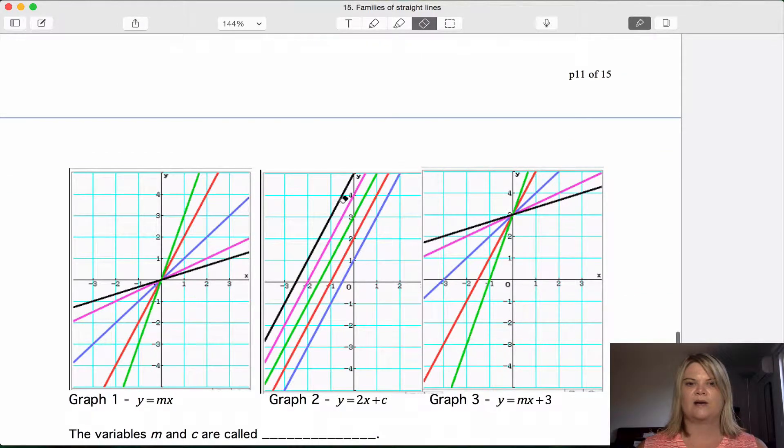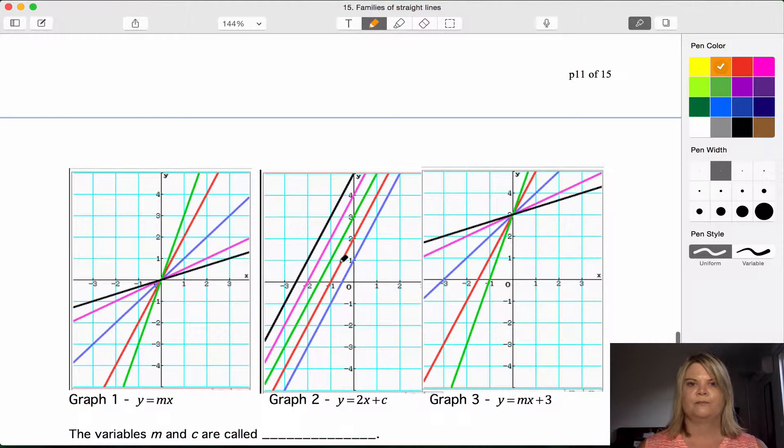So these lines will all be parallel. This one is 2x plus 1 because it goes through plus 1, 2x plus 2, 2x plus 3, 2x plus 4, 2x plus 5, and it will keep on going if you had more and more. So the family of graphs y equals 2x plus c.